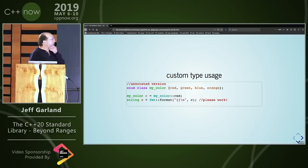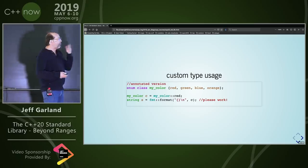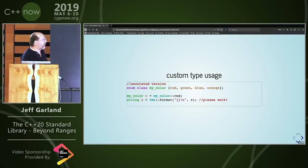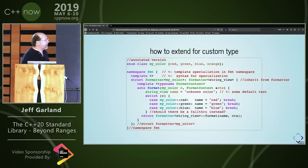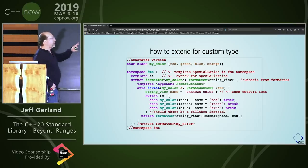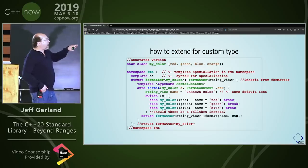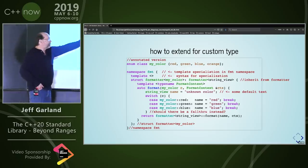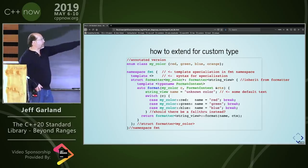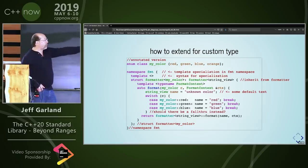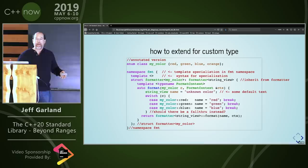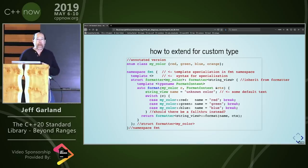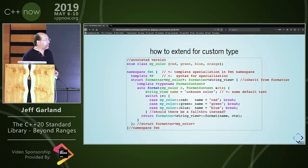Custom types: if I have a custom type, the system doesn't know anything about it and it won't compile. To extend for a custom type you make a specialization of the formatter, which returns a formatter string_view format with some machinery. In this case I've got a switch statement that changes enumerated types into strings. If you want a custom format language for your special types, you can do that too — chrono is actually going to take advantage of that capability, so there's a large amount of extensibility here for your own types.